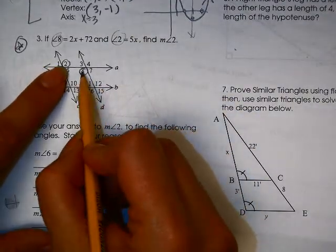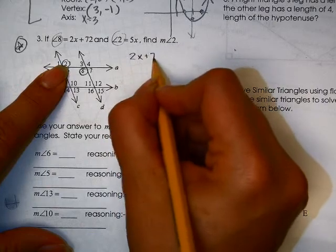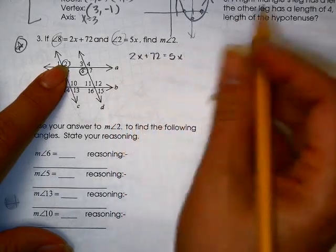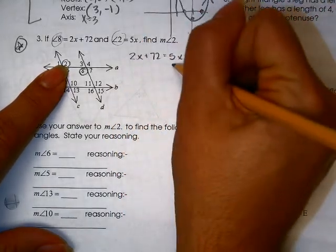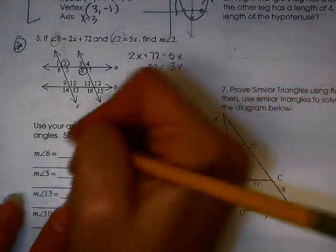Okay, so these are equal to each other, so I would say 2x plus 72 equals 5x. And so I subtract, I get 3x equals 72, and 72 divided by 3 is 24.